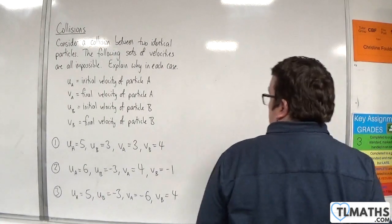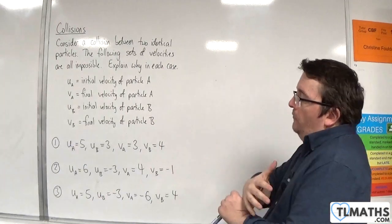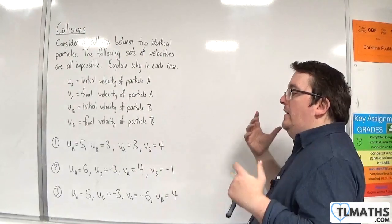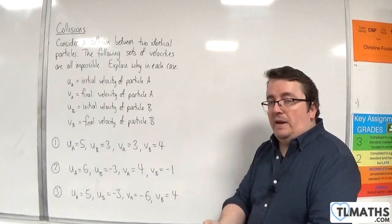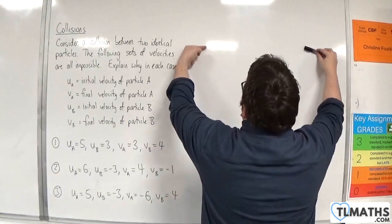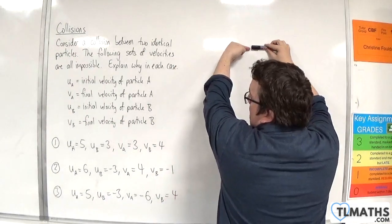Number two: the initial velocity of A is 6 meters per second, and the initial velocity of B is minus 3 meters per second. So A and B are coming in to collide with one another in different directions.